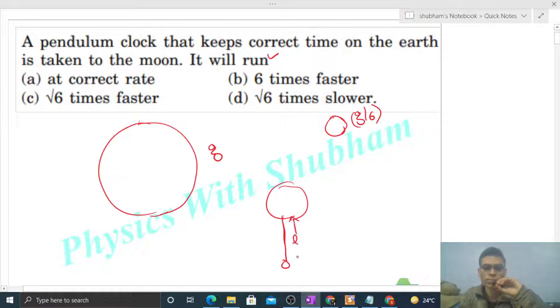Then time period on the surface of Earth will be 2π under root of l by g. That is time period of this pendulum on the surface of Earth. Now time period Moon pe kitna hogar? 2π constant, under root l.